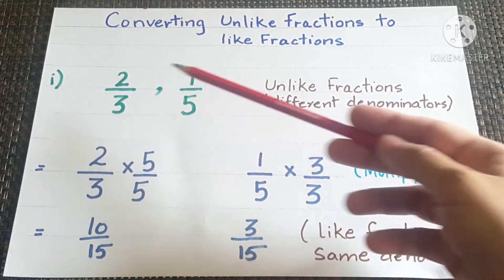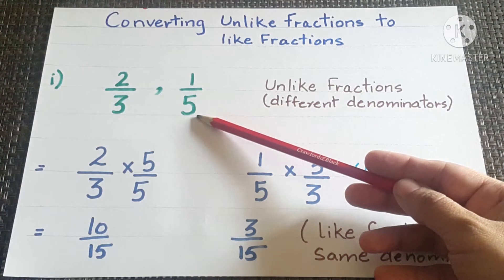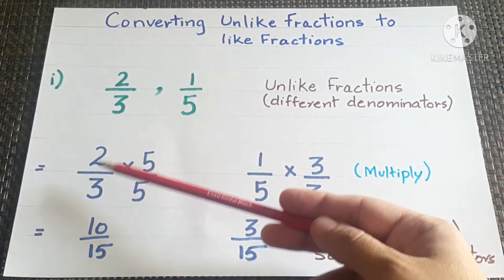Here the denominator is 3, here the denominator is 5. Now how will we convert it into like fractions?